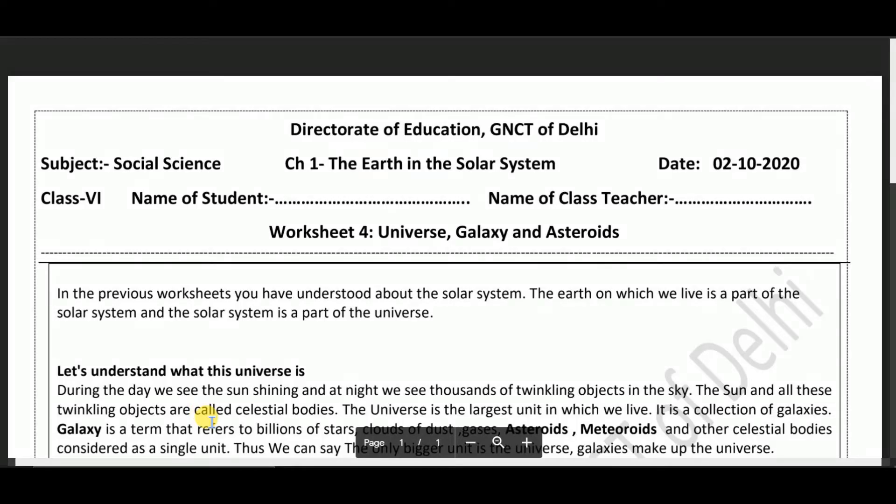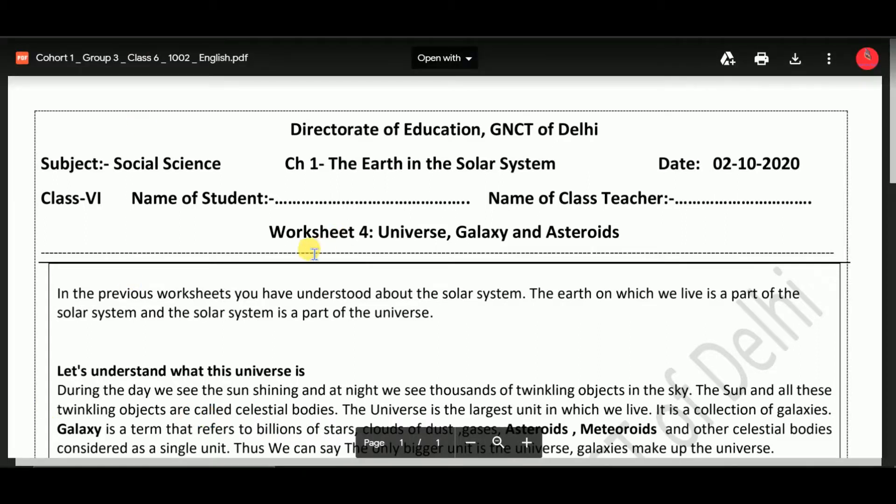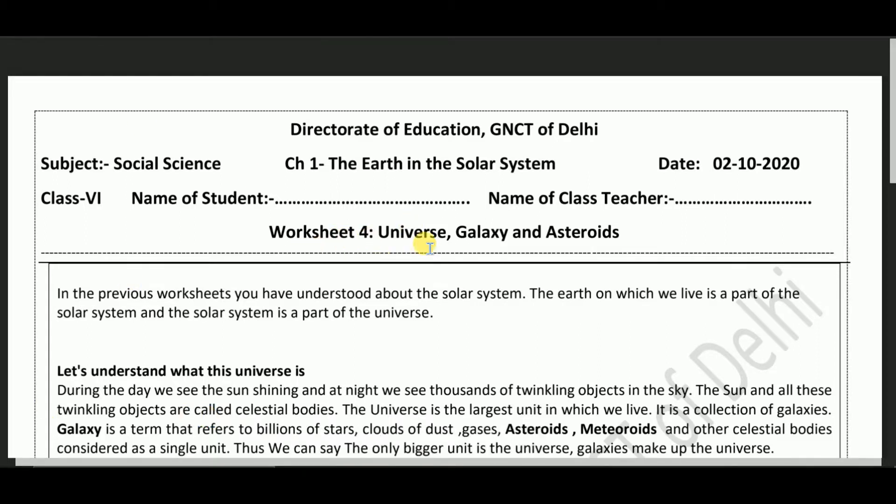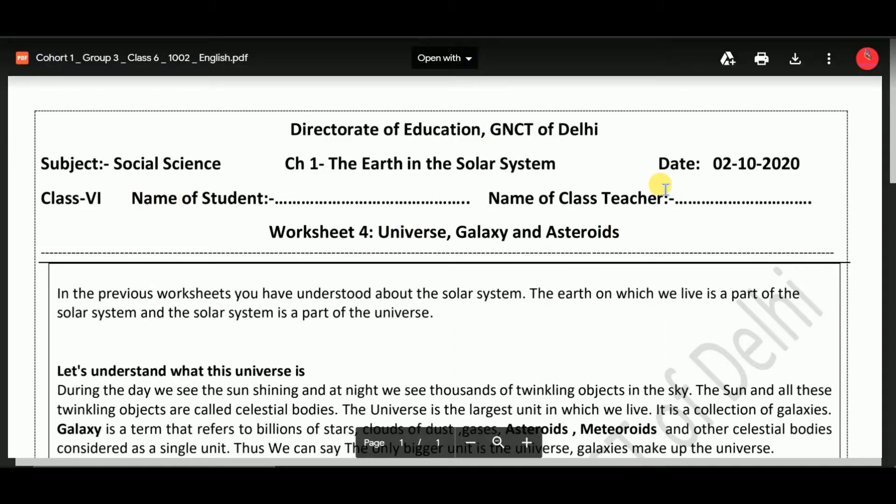Hi guys, my name is Ishra and now we'll continue with the virtual lesson. Let's begin with our training for the day. Today we will study worksheet number 4 which is on universe, galaxy and asteroids. We have to do it on 2nd October 2020 for Class 6. We will discuss chapter 1, the Earth in the solar system, which is of subject social science. You have to write your name and the name of your class teacher.